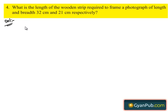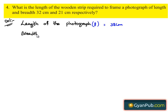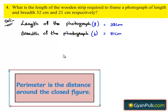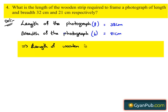Let us take down the given dimensions. The length of the photograph, denoted by L, is equal to 32 cm, and the breadth of the photograph, represented by B, is equal to 21 cm. Since the photograph is in the shape of a rectangle, the length of the wooden strip required to frame the photograph is nothing but the perimeter of the rectangle.